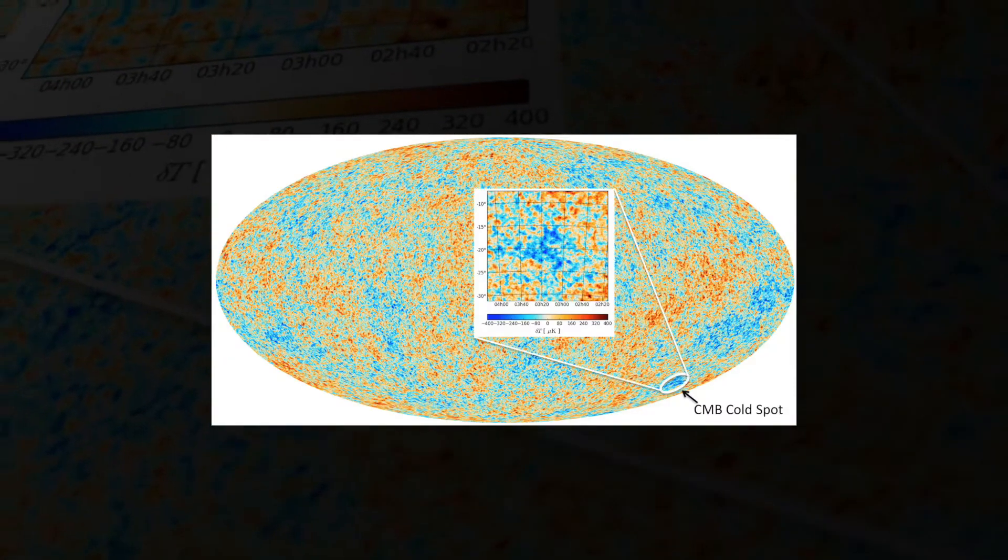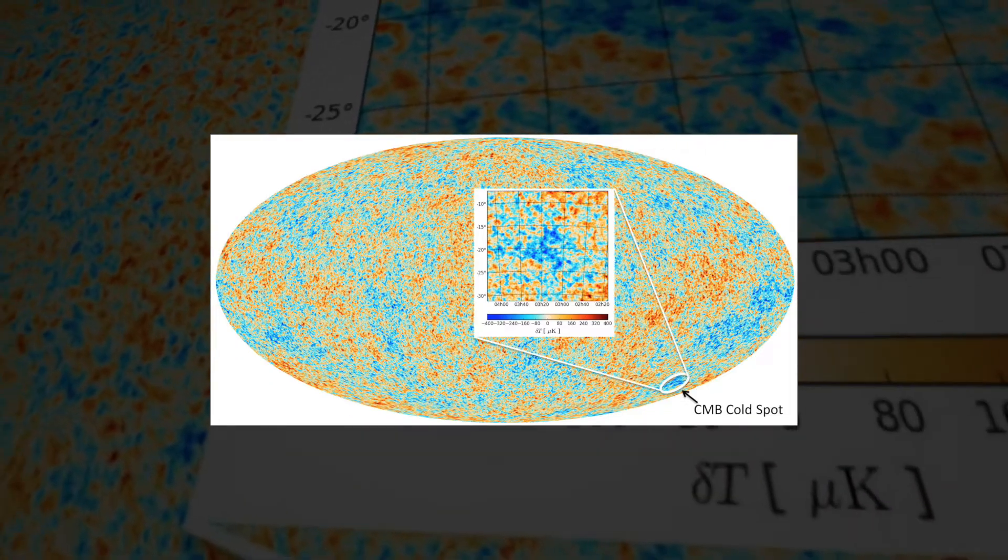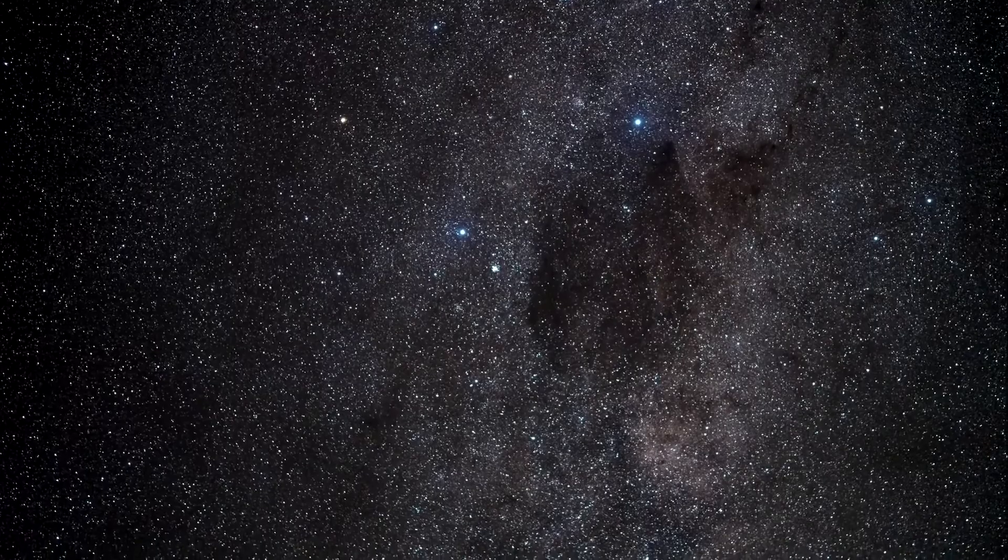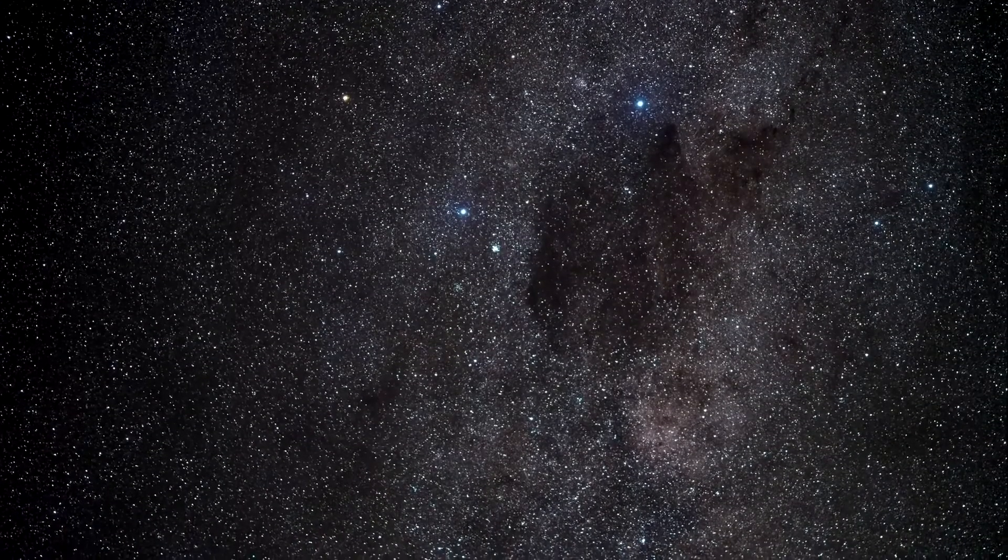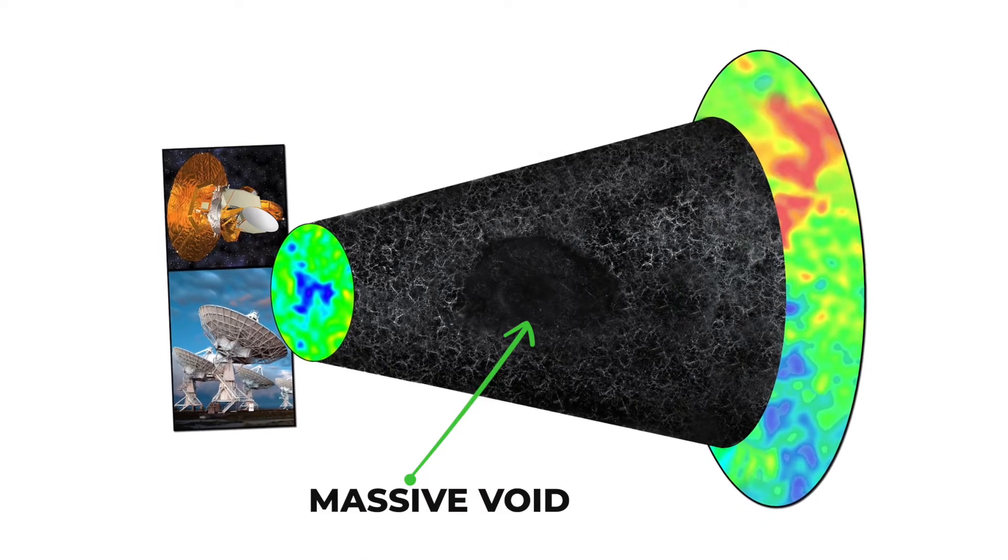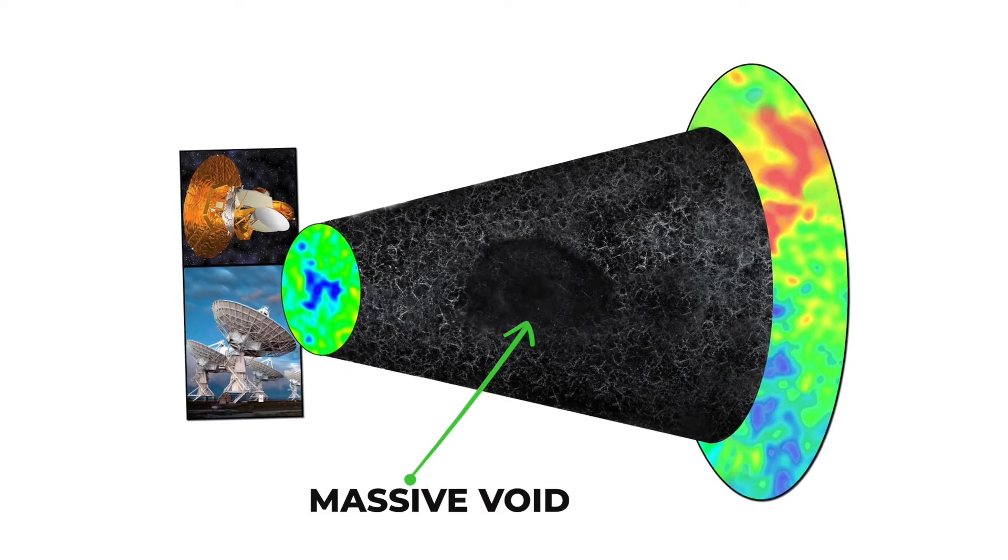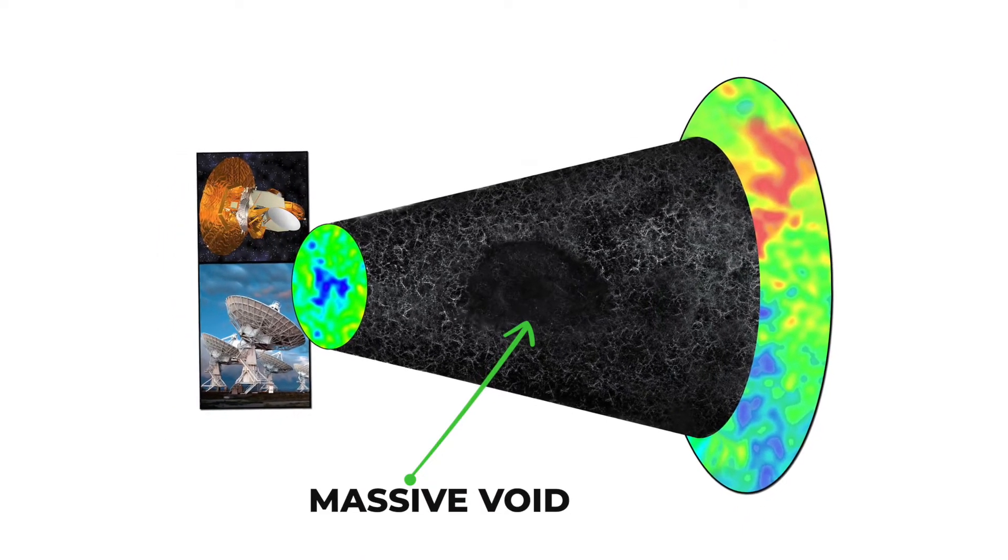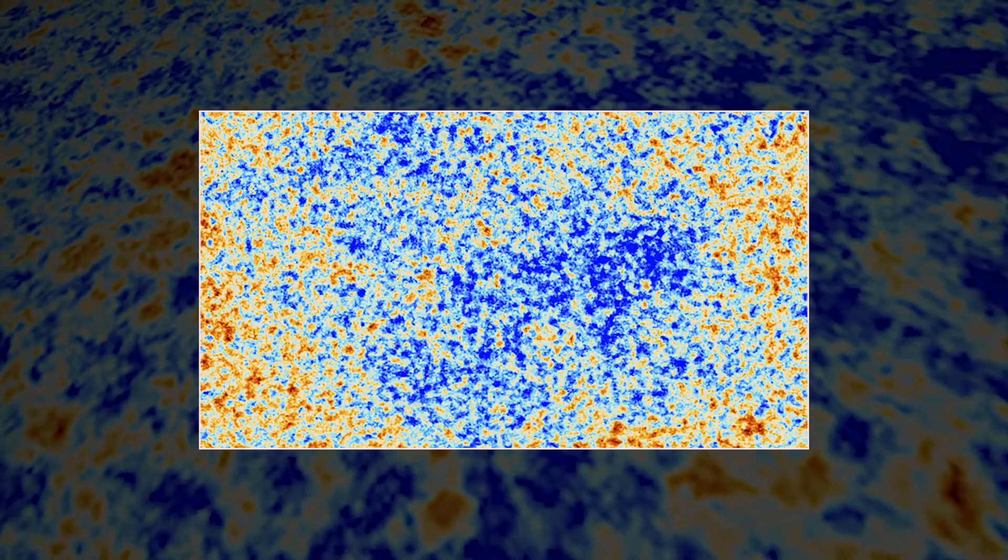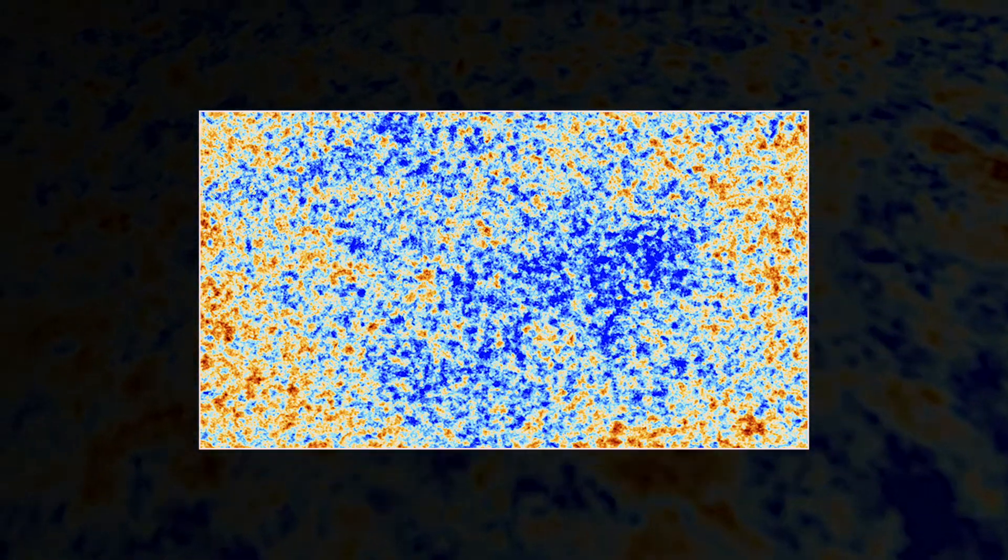this minute region of the universe is 140 microkelvin colder than the rest of the cosmic microwave background radiation, also called CMB radiation, found throughout space, which is a significant difference. One of the most popular theories explaining what is going on here contains that there is a massive void sitting in between us and the primordial CMB, which can influence the readings scientists take leading to the appearance of the cold spot.